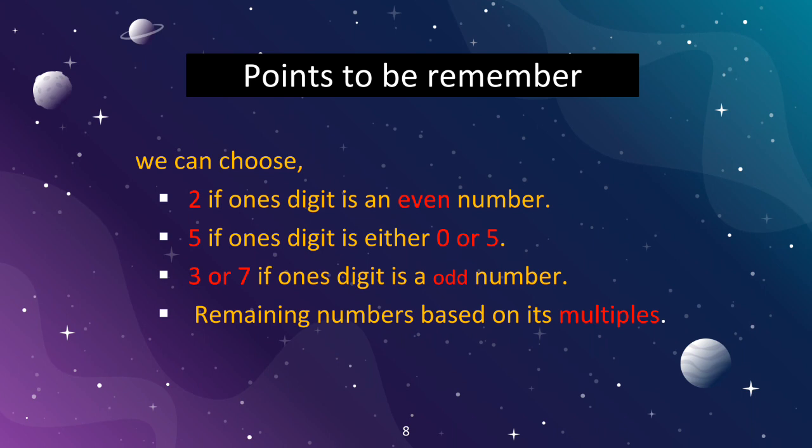For example, for 28: 28 is a multiple of 4, 7, and 14. In that case, we can use only the prime numbers as divisors.